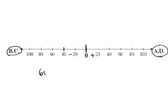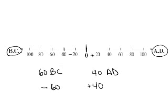let's say, 60 BC and 40 AD, you just convert that into regular numbers. It'd be negative 60 and positive 40.